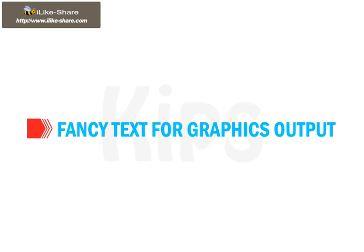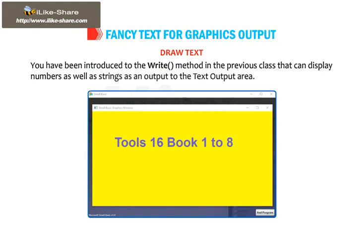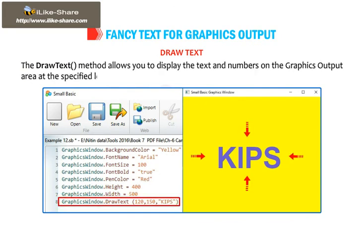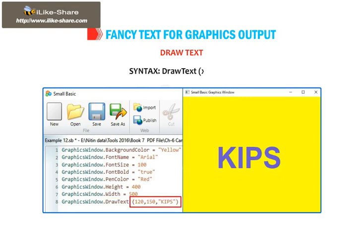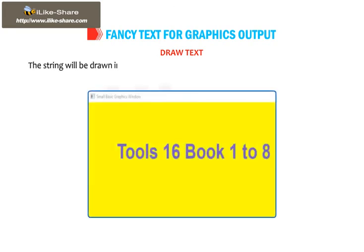Let's understand how to write fancy text for Graphics Output. The Draw Text method allows you to display text and numbers on the Graphics Output area at the specified location. The position of the text can be specified by the X and Y coordinates. The syntax is: DrawText(X, Y, Text). In this statement, Text represents the string, and X, Y is where the string will be located. The string will be drawn in the Graphics Window using the default brush and the default font.